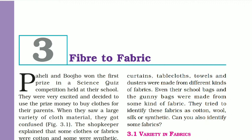Hello everyone, welcome to Harikrishna Tutors. Today we will do Class 6 Science Chapter No. 3, which is Fiber to Fabric. In this chapter we will learn how our clothes are made and the different types of clothes we get, like cotton, jute, and silk — where we get all these clothes from and how they are made.